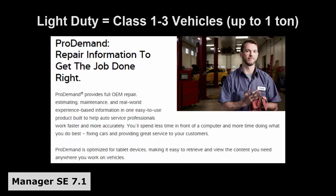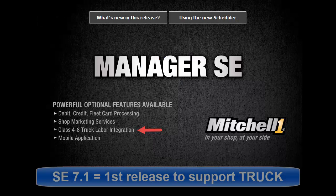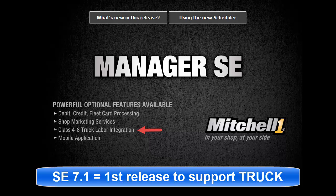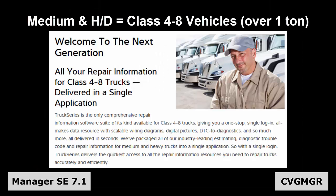The standard SE subscription covers all popular cars, trucks, and vans up to 1 ton, also known as Class 1 through 3. Version 7.1 is the first SE release that supports the CVG-MGR product code for adding medium and heavy duty trucks to vehicle selection for creating estimates and orders.